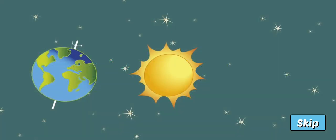Seasons are caused by the Earth's tilt. As the Earth revolves around the Sun, sometimes the top of the Earth, also known as the Northern Hemisphere, is tilted towards the Sun.